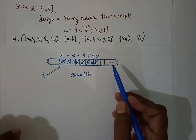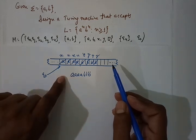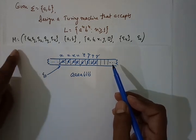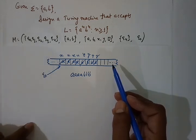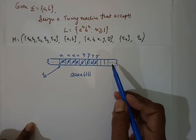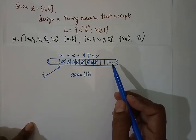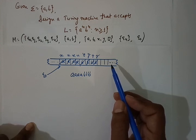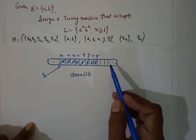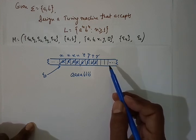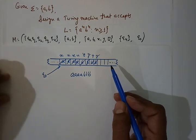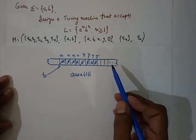We apply this logic and write it in the form of a transition function. In the last lecture, we already saw how a transition function for a Turing machine can be defined. So it will not be difficult for us to write the transition function here. Let's start with the transition functions one by one.